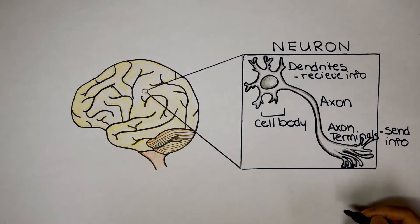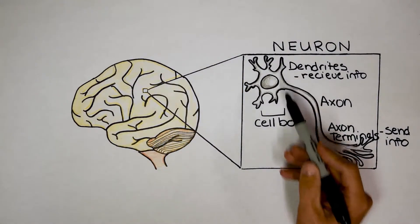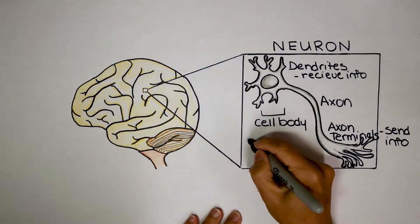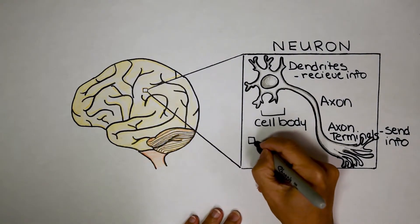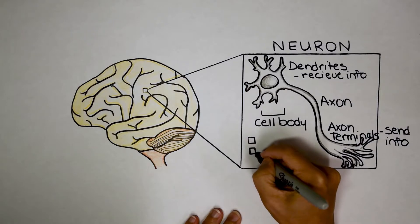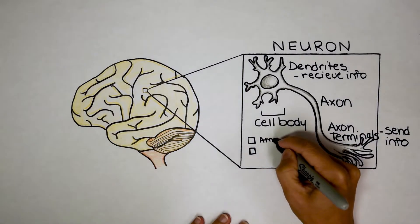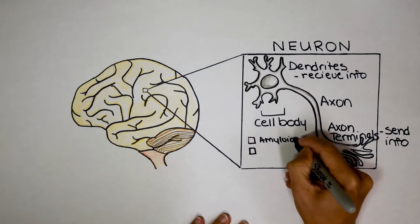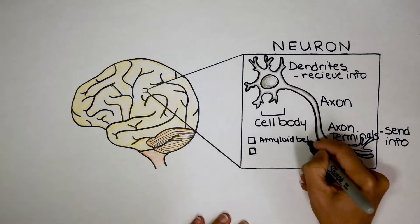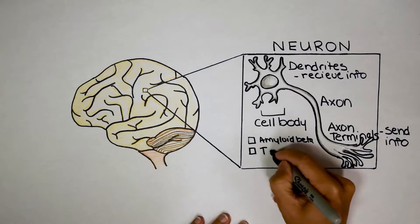Now that you know what the dendrites and the axon terminals do, where does Alzheimer's happen? And the answer, unfortunately, is everywhere. So there's two proteins that go awry during Alzheimer's disease. One of them is called amyloid beta, and we're going to talk a lot more about that. And the other one is called tau.